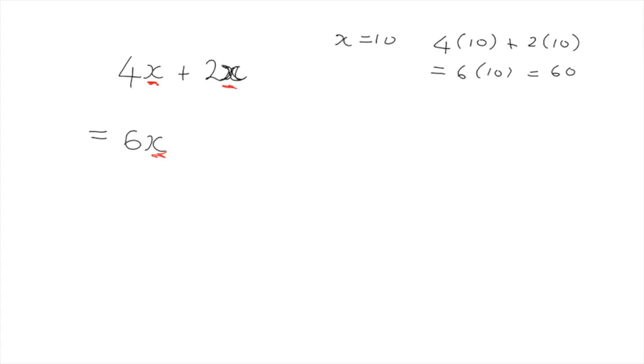And if we put in x is equal to 30, you're going to have exactly the same story. You've got 4 thirties for 4x, and 2 thirties, which is 2x. And if you think about it, you've got 4 thirties and you've got 2 thirties. How many thirties do you have in total? You've got 6 thirties in total, and that's 180. So you can see these are equivalent expressions. You can combine the 4x and the 2x to make 6x. And that is because 4x and 2x are like terms. They've got exactly the same variable.